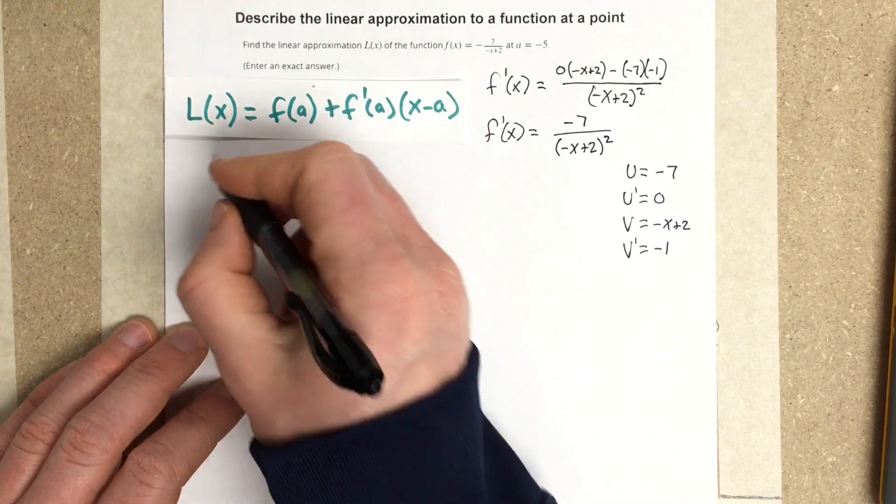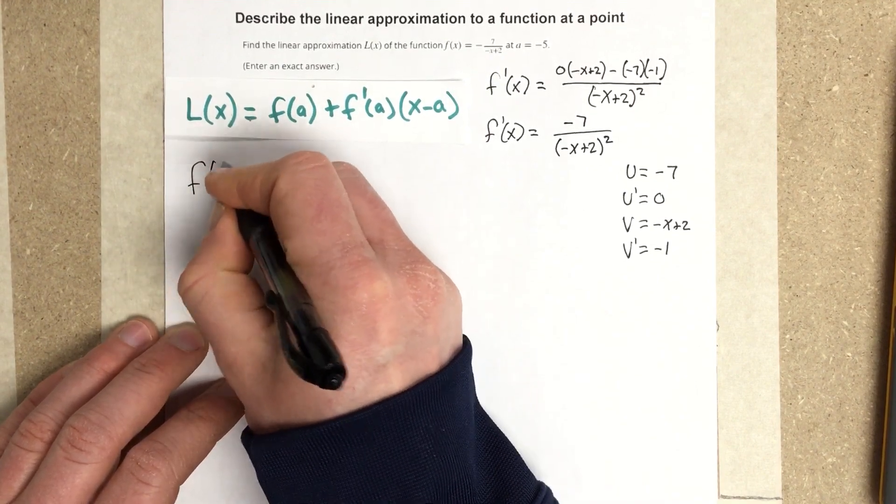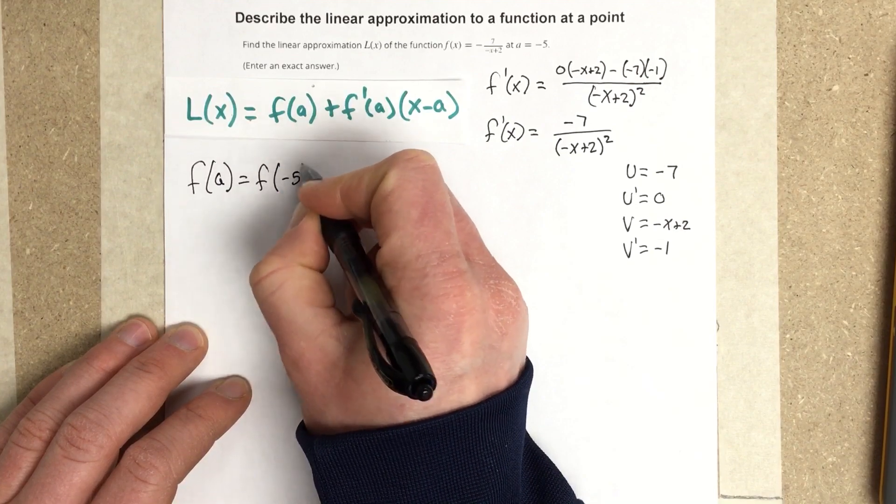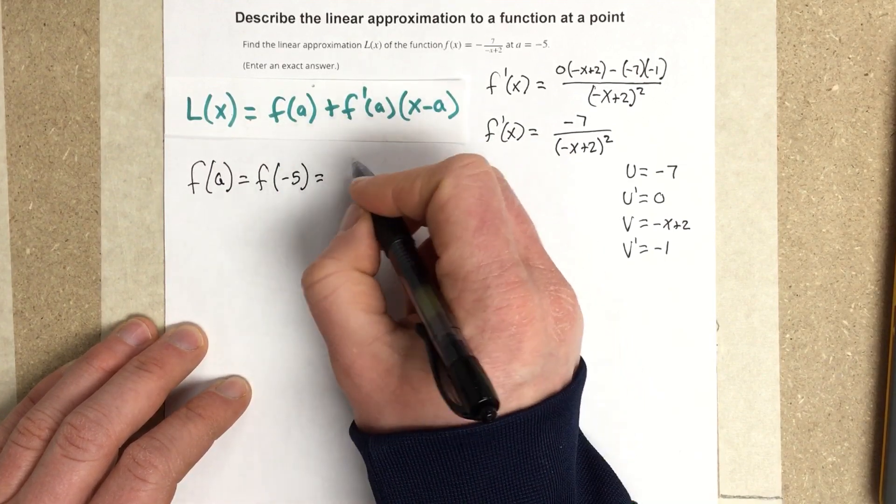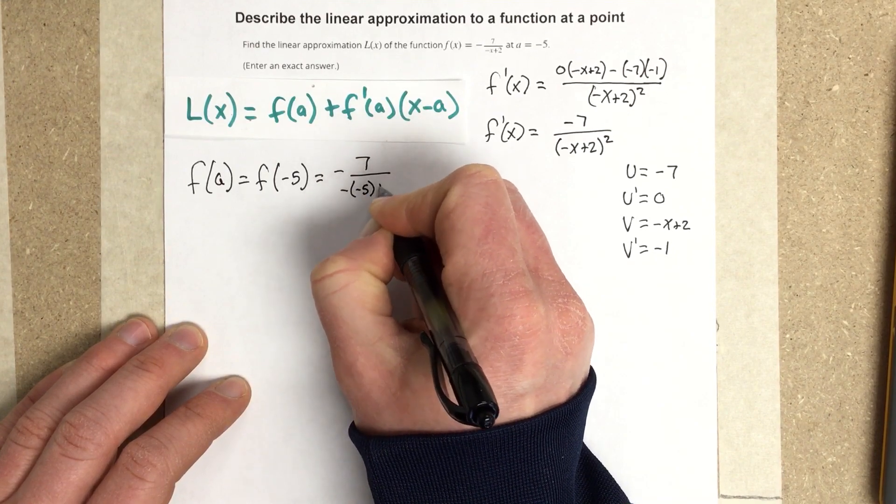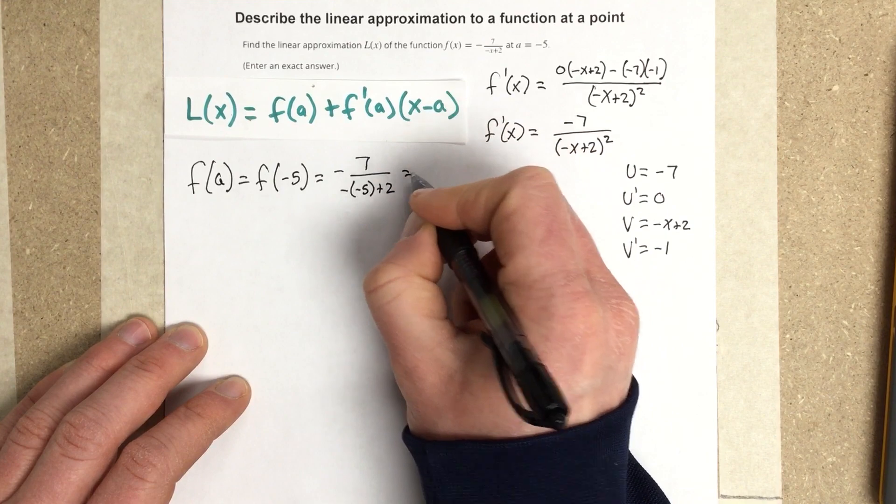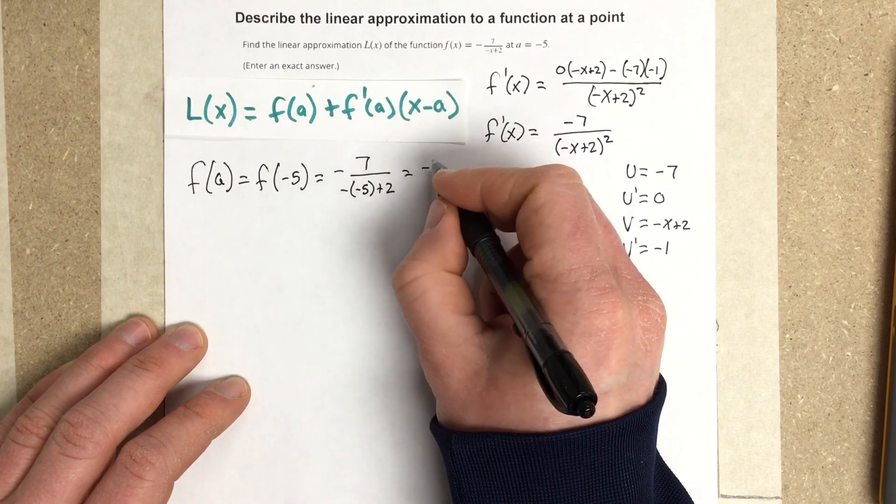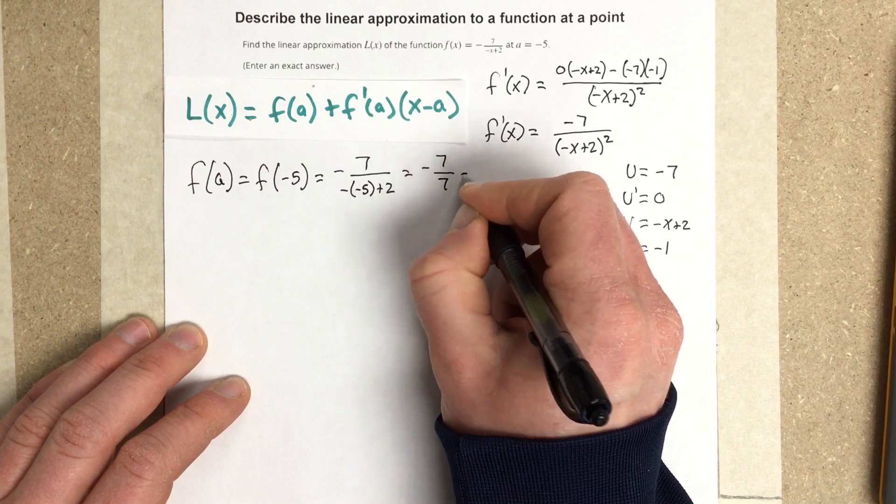And we'll go through and I'm going to evaluate F of A. F of A is equal to F of negative 5, which is equal to negative 7 over negative negative 5 plus 2, which this will be positive 5 plus 2, so I get negative 7 over 7, which is negative 1.